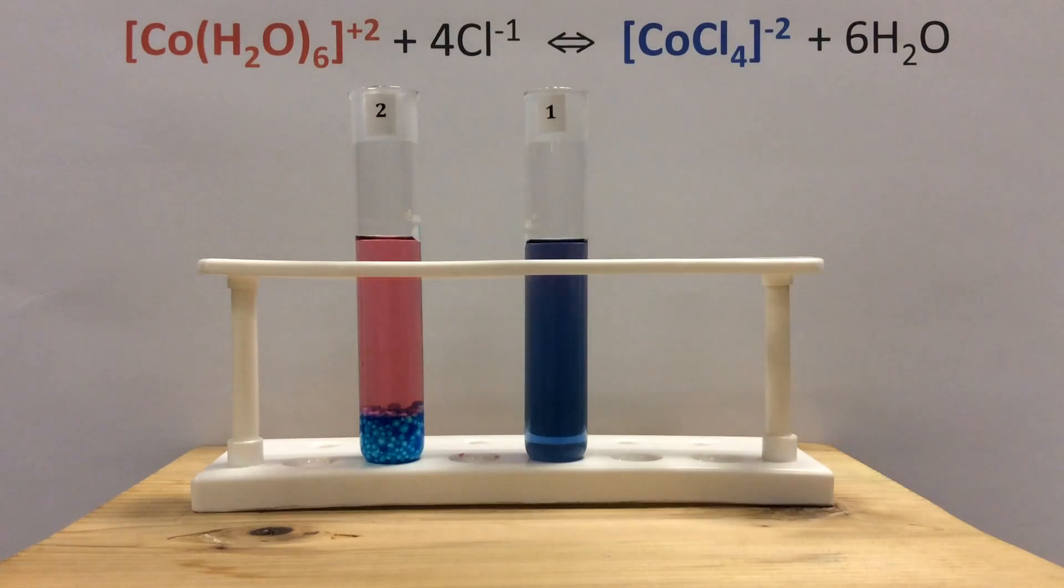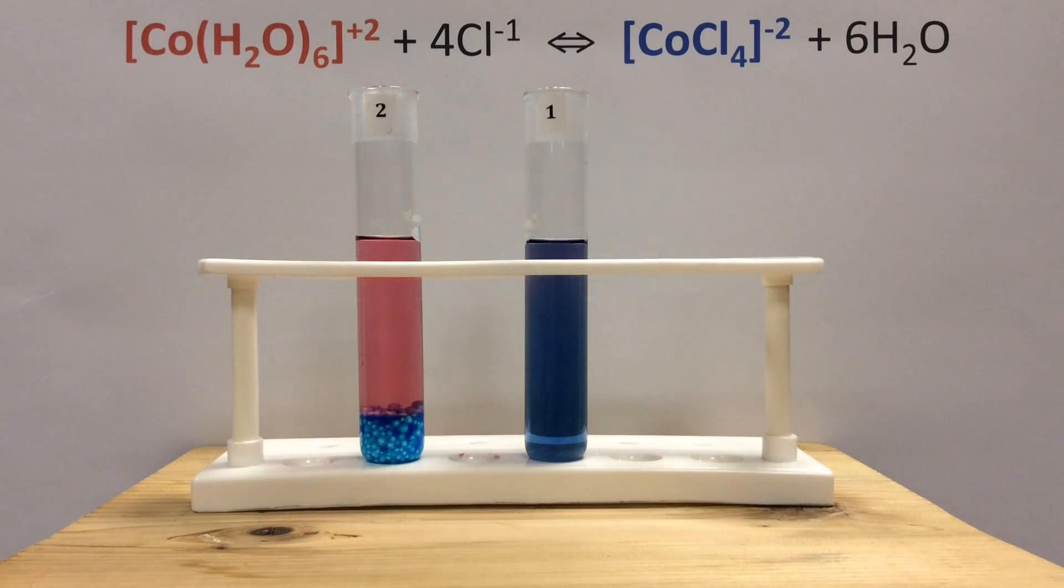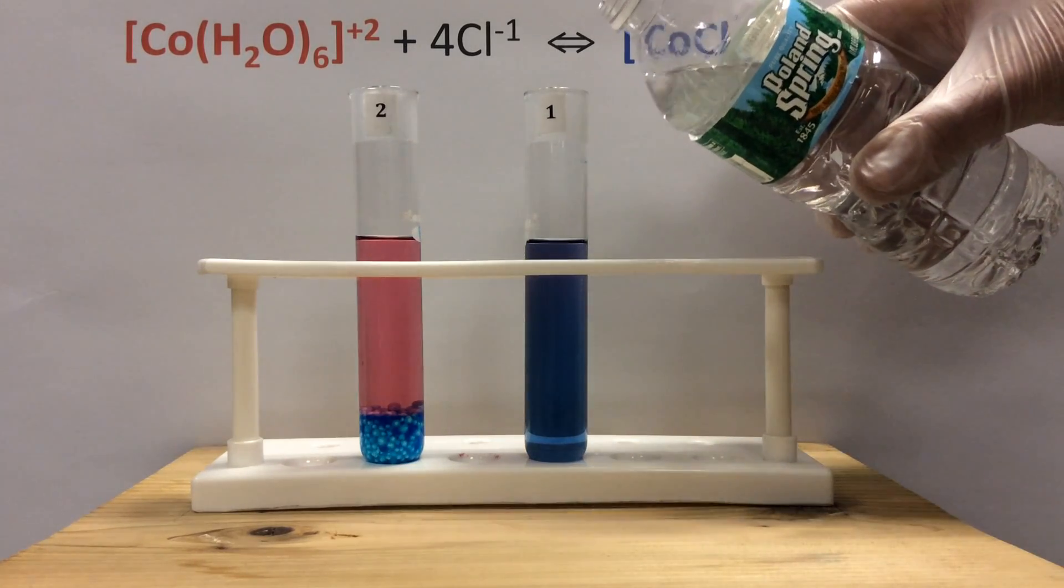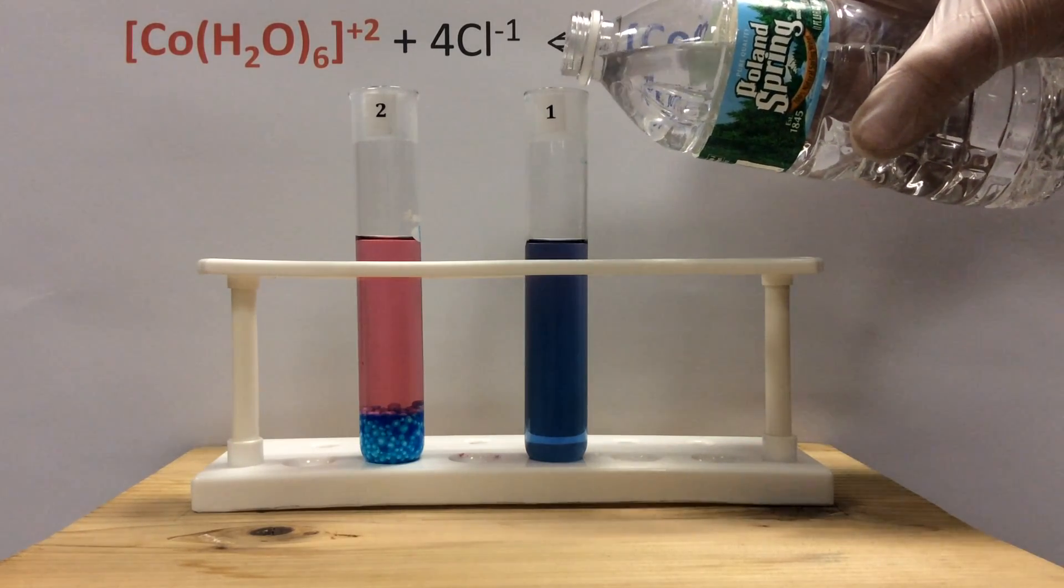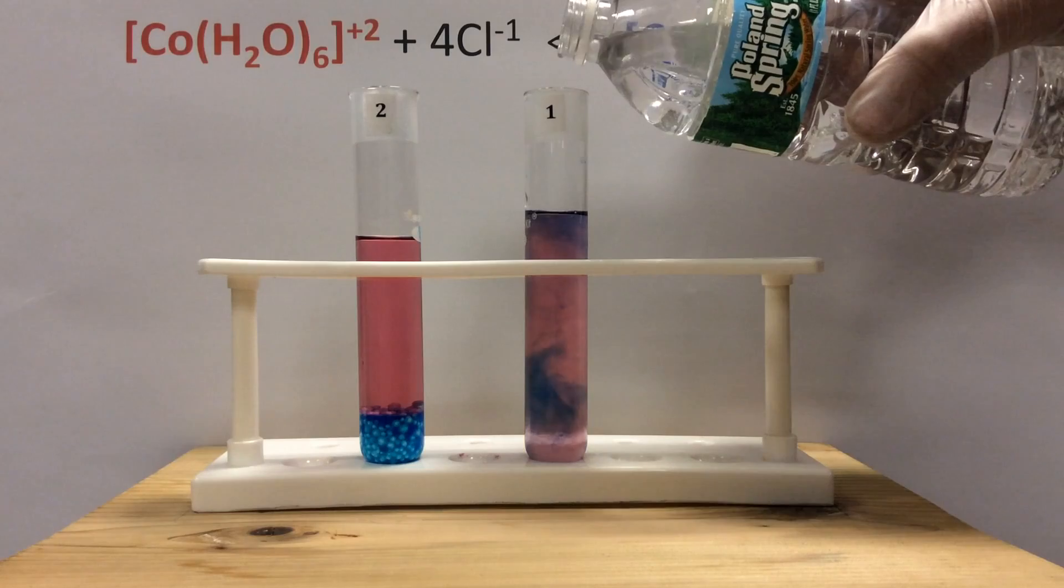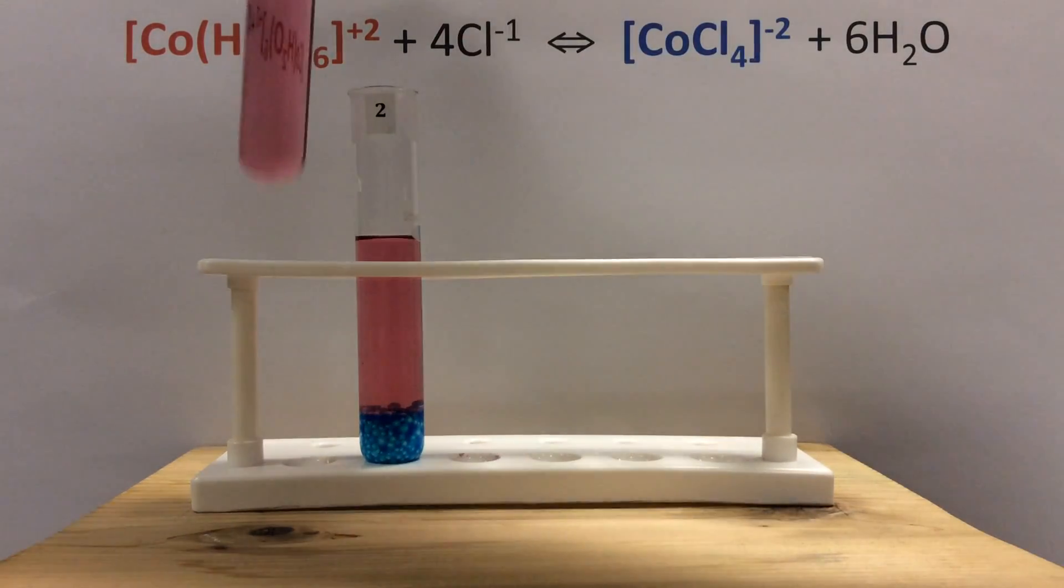Here comes test tube one again, which we can see is clearly favored with the blue compound. Now we're going to add some water—Poland Spring water, and they didn't pay us any money to do this—but we're gonna add some water. By adding water you can see definitely a shift toward the pink cobalt complex, and that pink cobalt complex is on the reactant side.